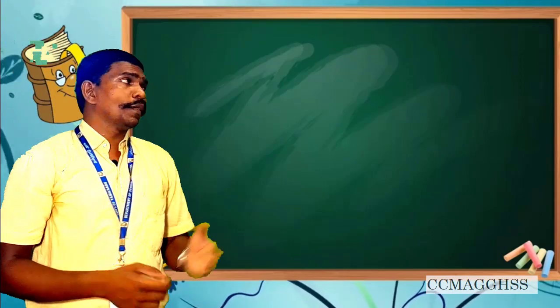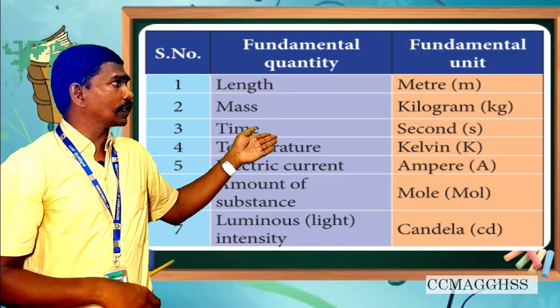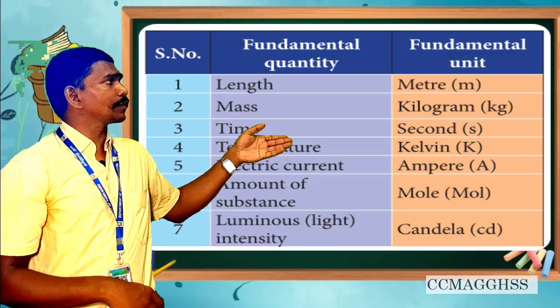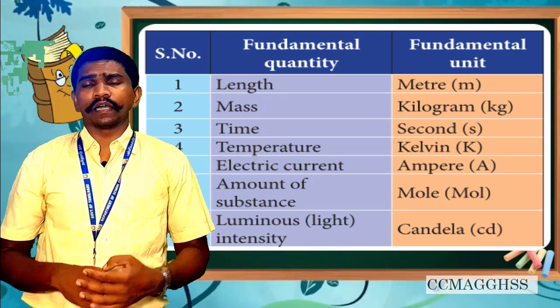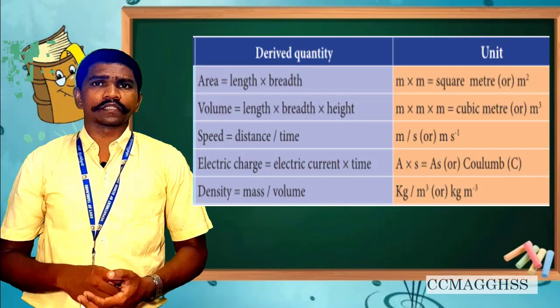The next one is derived quantity. Multiplication of these fundamental quantities or dividing of these fundamental quantities gives derived quantities. For example, area, volume - everything is said to be derived quantities.